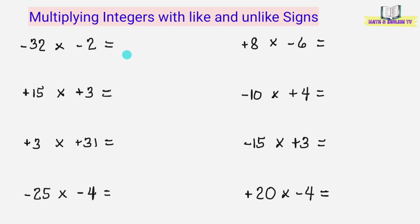Sa pag-multiply ng integers, imumultiply lamang natin yung numbers at lalagyan natin ng sign yung answer. Kapag pareho ang sign ng integers na iminultiply natin, lalagyan natin yung answer ng positive sign. Kapag magkaiba naman ang sign ng integers na iminultiply natin, negative ang ilalagay natin yung sign sa answer.